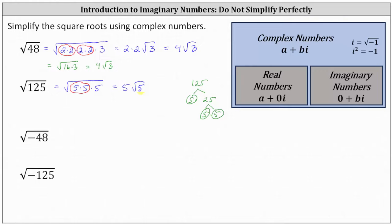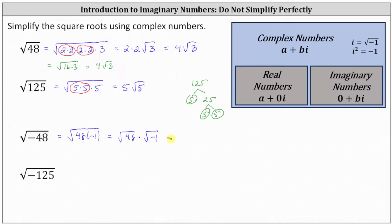Notice for the first two examples, the square roots simplify to real irrational numbers, which are complex numbers when b equals zero and a does not. Next, we have the square root of negative 48. There is no real number squared equal to negative 48, indicating this will simplify to an imaginary number. Negative 48 is equal to 48 times negative 1. Let's write the square root of negative 48 as the square root of 48 times negative 1, which is equal to the square root of 48 times the square root of negative 1. The square root of 48 is equal to 4 square root 3, and the square root of negative 1 is equal to i, indicating the square root of negative 48 is equal to 4 square root 3 times i. Imaginary numbers are complex numbers where a equals zero and b does not.